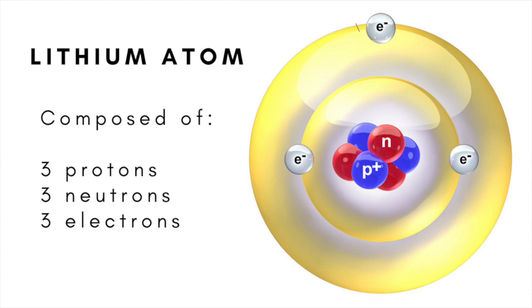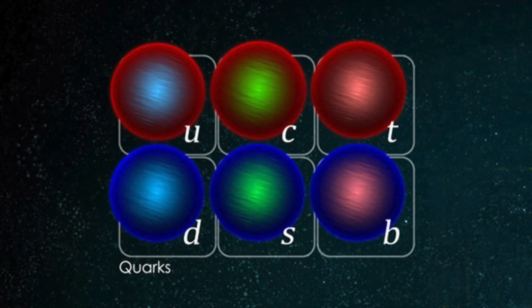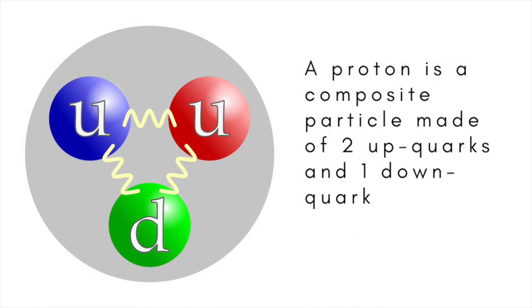Protons and neutrons experiments have shown are made up of even smaller particles called quarks, of which in the Standard Model there are 6 varieties known as up, down, top, beauty or bottom, charm and strange. A proton for instance is really a bag of 3 quarks, 2 up and 1 down. A neutron is made of 2 downs and 1 up.